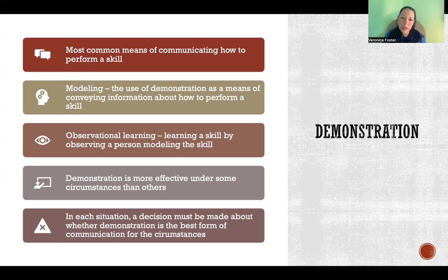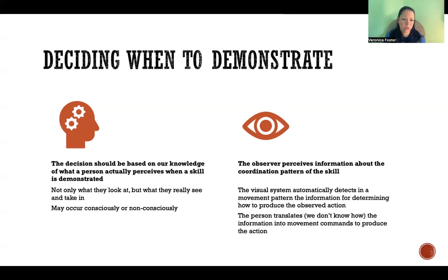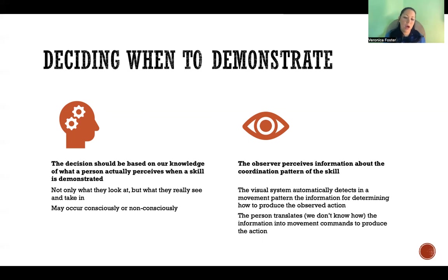It's important that when you're teaching someone a new motor skill, you consider whether demonstration is really the best way to communicate how to perform that skill. We should decide whether to demonstrate based on our knowledge of what the person is actually perceiving when you demonstrate — not just what they're looking at, but what they're actually taking in and perceiving about the skill.